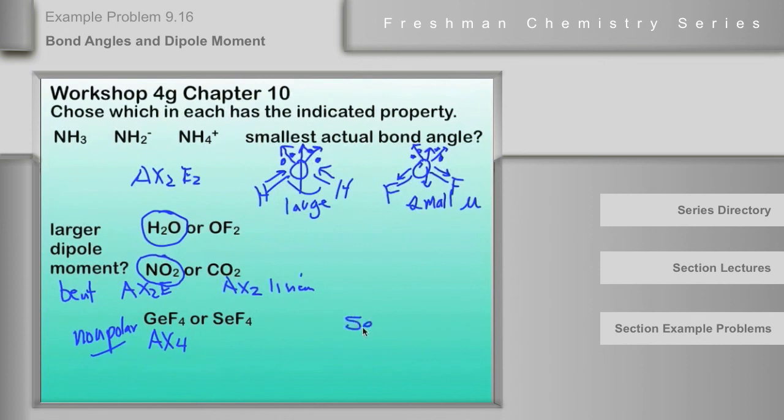What about SeF4? Well, SeF4 has a lone pair on the selenium. It's like SF4. So we have bond vectors going this direction. We have bond vectors going this direction. And then we have a lone pair here going that direction. But there isn't any reason to suspect that these perfectly balance. So the dipole moment for the molecule will have some positive magnitude. And since this other one is nonpolar, this AX4E will be polar. It may not be real polar, but it will be polar. And so it has a larger dipole moment.